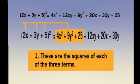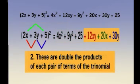Number 1: These are the squares of each of the 3 terms of the trinomial that was squared. Number 2: The other 3 terms are double or twice the products of paired terms.